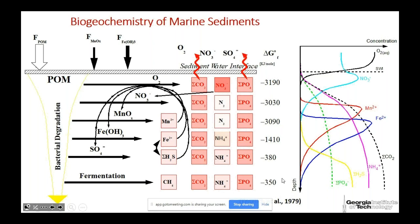A lot of people think iron as a limiting nutrient in the ocean comes from atmospheric deposition. But marine chemists have demonstrated over the last 15 years that sediments could be a source of iron as well. The respiration processes produce compounds — the reduced metabolites. Reduced from manganese would be Mn2+, reduced from iron oxide would be Fe2+, and from sulfate would be sulfide. These compounds can diffuse up and be re-oxidized once they reach the oxic zone, and in that process they generate acidity.